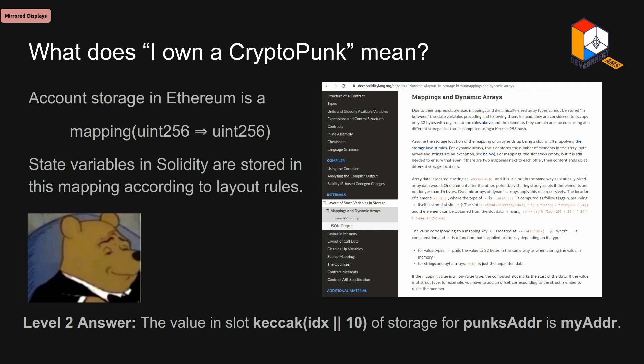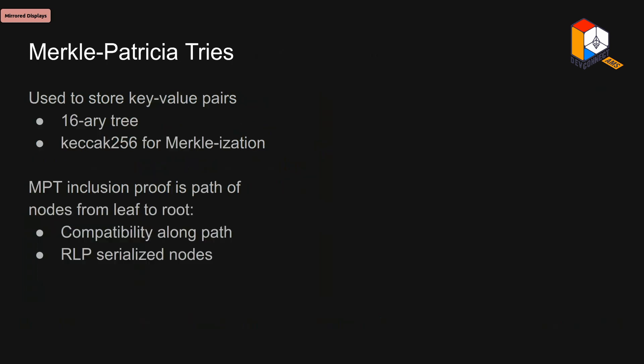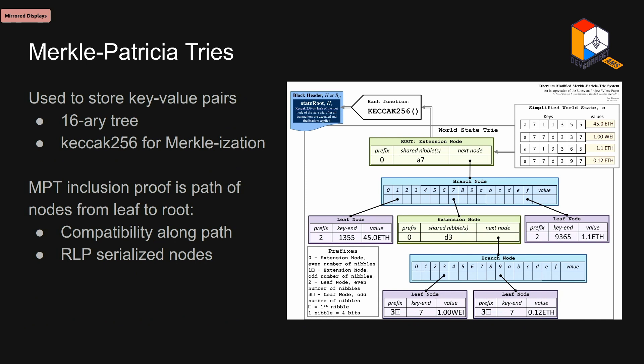If you go dig into the documentation, you'll find that the statement that you own a CryptoPunk corresponds to the value in a certain slot determined by the Keccak hash of the index of the CryptoPunk concatenated with 10 — where 10 is the location of this mapping in Solidity — happens to contain your address. So at the level of the EVM, that's what it means to own a CryptoPunk. Now let's go one layer deeper to understand what it would mean to prove this statement, and for that we're going to have to dig into the data structures underlying account and state storage in Ethereum. Ethereum commits to all data on-chain in what's called a Merkle-Patricia trie — a degree-16 trie that uses the Keccak256 hash for Merkleization. To give a proof of Merkle inclusion in this trie, one has to give an inclusion proof, which is a path from leaf nodes to the root node showing compatibility with the Keccak hash along each node, and also using RLP serialization of the nodes.